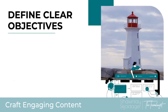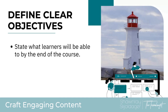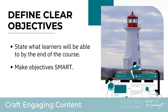Next up, we've got to really dig into these objectives. In our analysis, we talk to our stakeholder and get information about their objectives for the training. Then once we're creating the learning experience, we need to define really clear objectives that resonate with our participants. Let's talk about three things that really set us up well with our objectives. First, we want to state exactly what learners can expect to know or do by the time we finish. We also want to make sure our objectives are SMART — Specific, Measurable, Achievable, Relevant, and Time-bound.